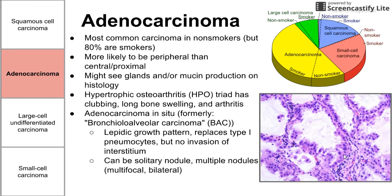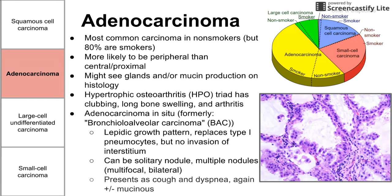Adenocarcinoma in situ can be a solitary nodule, or it could be multiple nodules. If it's multiple nodules, it could be multifocal or bilateral — you could see one, two, or more nodules together or far apart, even in different sides of the lung. You can't really predict the distribution. Adenocarcinoma in situ usually presents in the clinic as a cough and shortness of breath, and you may or may not have mucus.